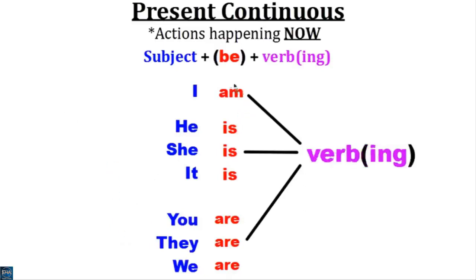Now remember the verb 'to be': 'am' is for the subject 'I'. For he, she, it, the verb to be is 'is'. For you, they, we, the verb to be is 'are'. Very good.